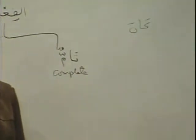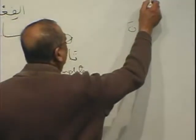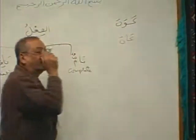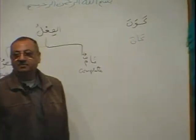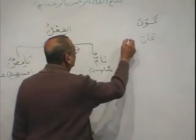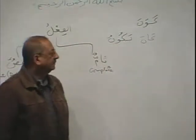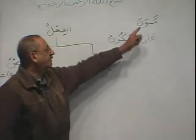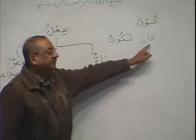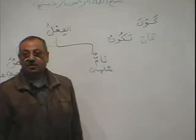Brothers and sisters, kaana is an incomplete word. What is the root of kaana? Ka-wa-nun — it is ka-wa-na. We are going to learn more in detail, but kaana is madi. What is the mudari'a? Yakuwnu. Now, this is a weak verb because in the middle there is a waw which changes into aleph, so the conjugation will not be normal.